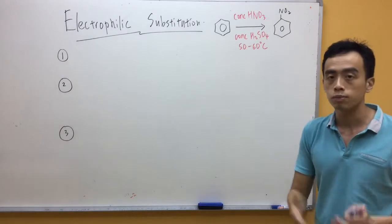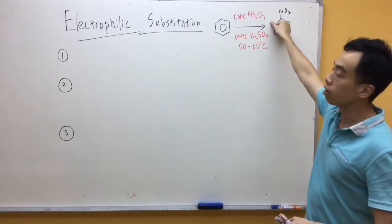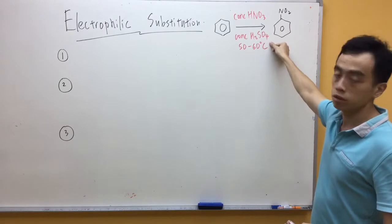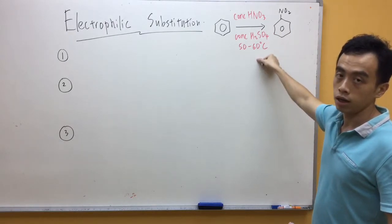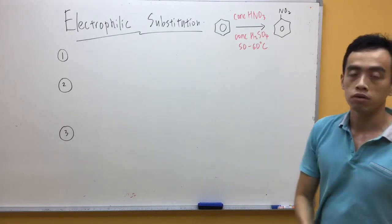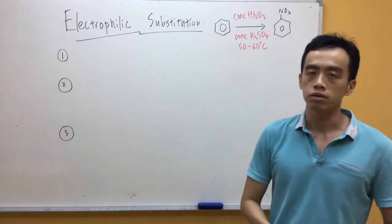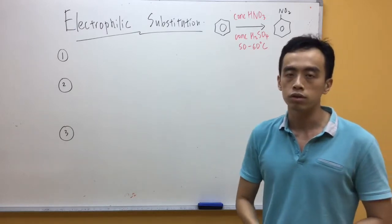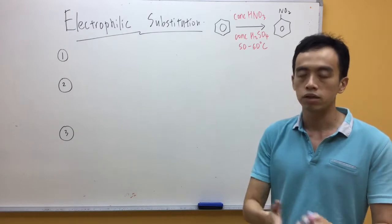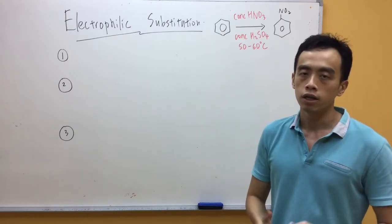The reagents and conditions for this particular conversion is concentrated HNO3, concentrated H2SO4, and slightly elevated temperature of 50 to 60 degrees Celsius. So that is the reagents and conditions for the conversion of benzene to nitrobenzene.